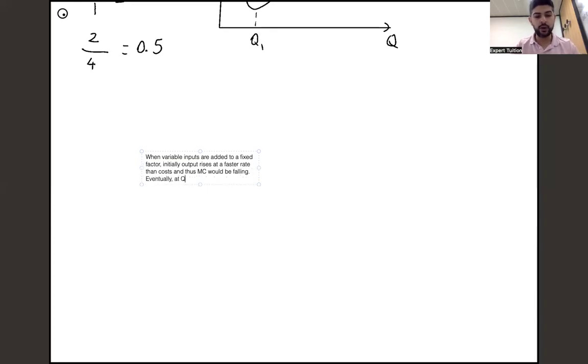Eventually, at Q1, alluding to the diagram above, at Q1, output will begin to rise at a slower rate than cost, and thus MC will begin to rise. At this point, the law of diminishing marginal returns has set in.